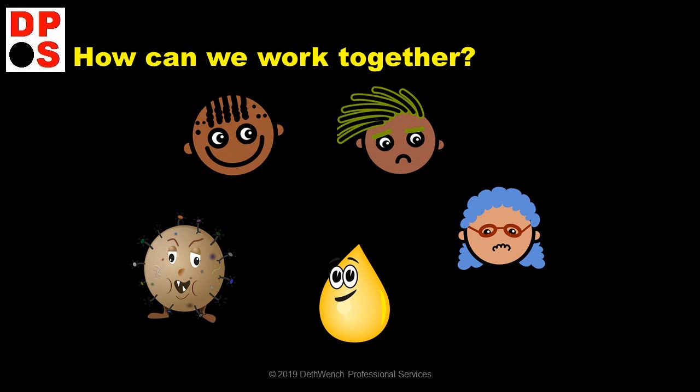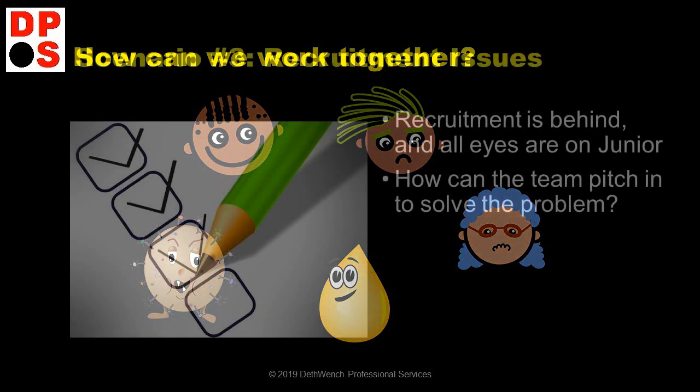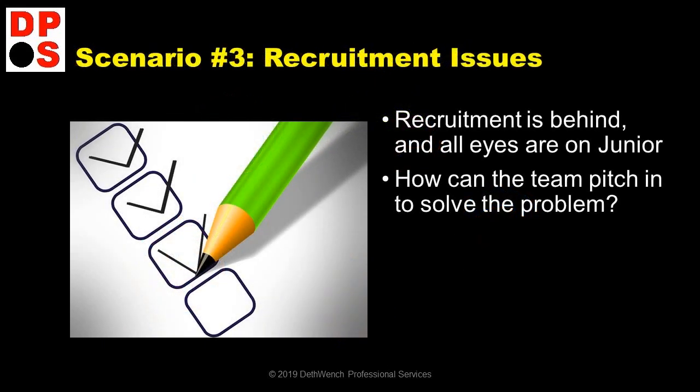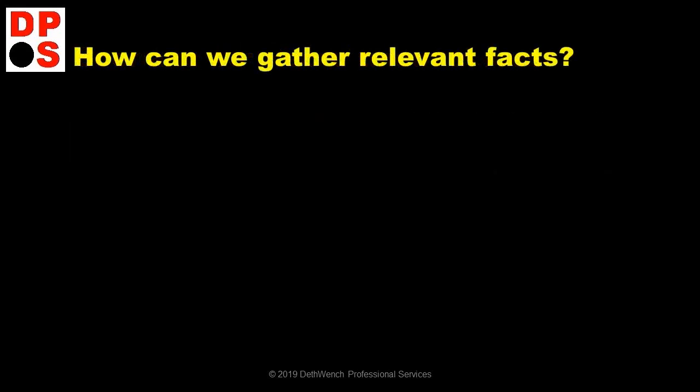And, speaking of recruitment, let's move on to Scenario 3. In the final scenario, Junior is going to the primary care clinic to recruit patients for the study, but he is behind target, so the study is delayed. What can the research team do to help? Before we actually answer that question, let's make sure we think about the facts we need.